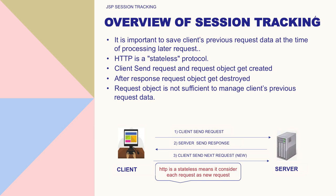The request object is not sufficient to manage client previous request data. As shown in the figure, there is one client and one server. In the first request, the client sends a request, the server gets the request, works on it, and sends a response back. One request object gets created and after the response it gets destroyed. HTTP is a stateless protocol and it considers every request as a new request, so in the new request it has no data from previously.